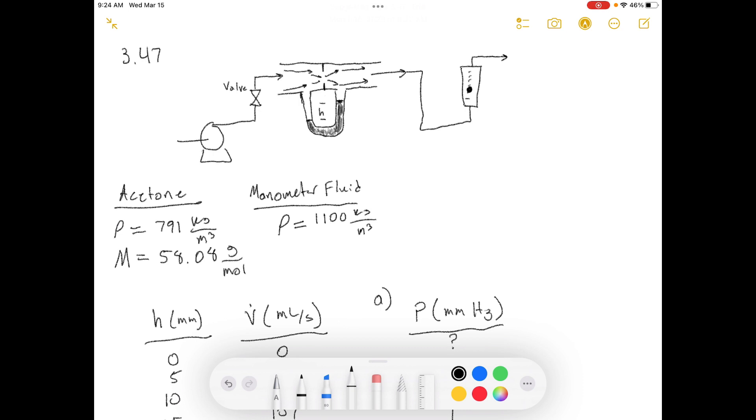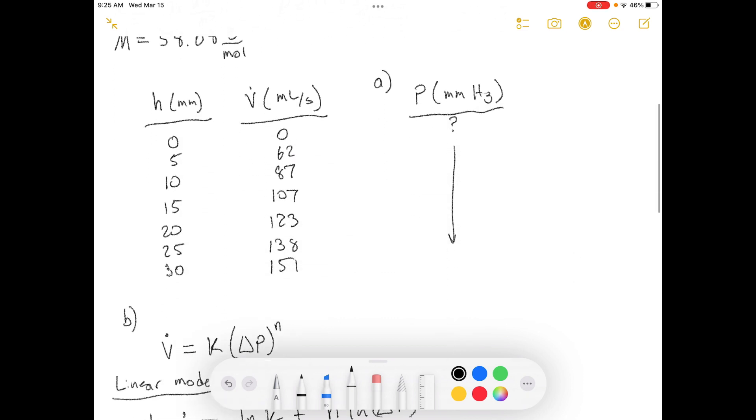The calibration is accomplished by connecting the orifice meter in series with a rotameter that has previously been calibrated for acetone, adjusting a valve to set the flow rate, and recording the flow rate determined from the rotameter reading and the rotameter calibration curve, and the differential manometer reading H. The procedure is repeated for several valve settings to generate an orifice meter calibration curve of flow rate versus H. The following data are taken, and I've replicated the data here.